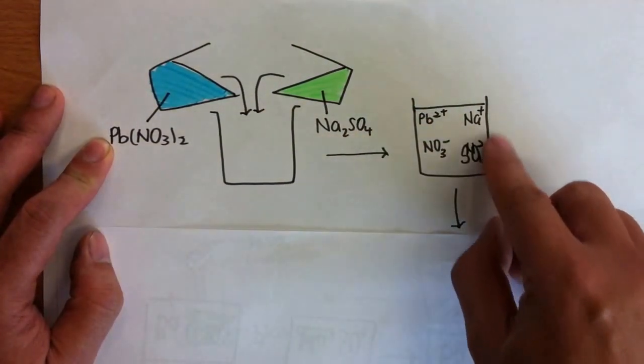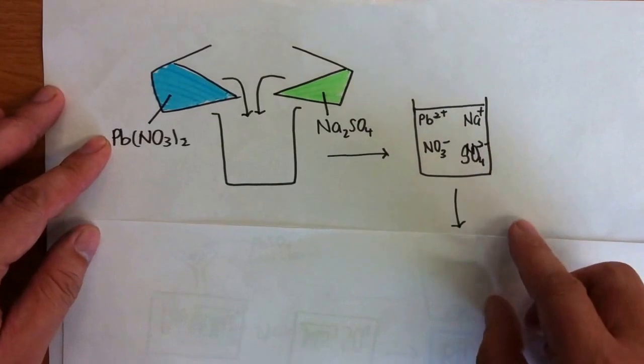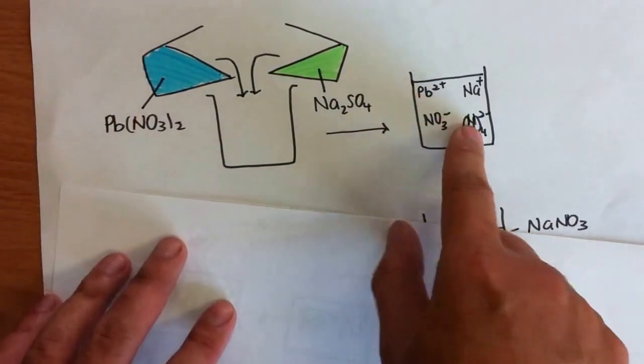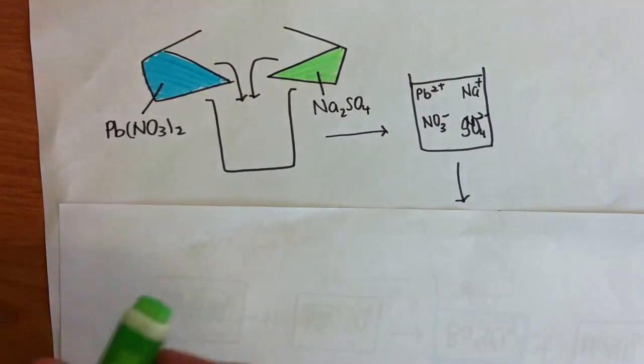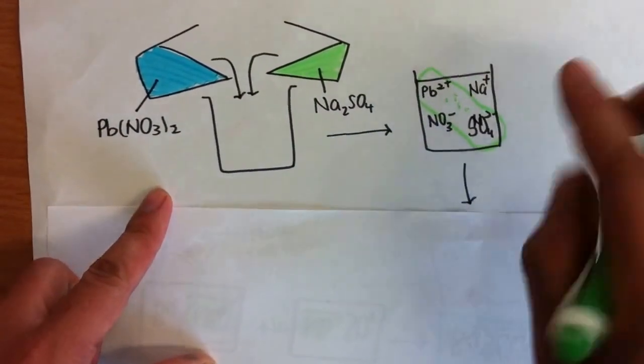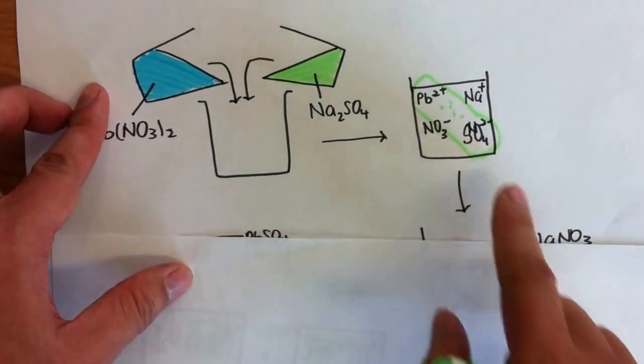Sodium sulfate will break up into free ions because it is aqueous as well. And then what happens is when lead and sulfate meet each other, they will permanently combine and form something known as lead sulfate.